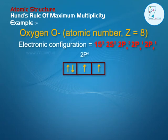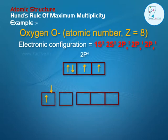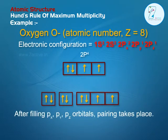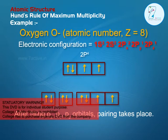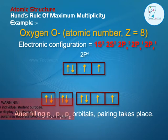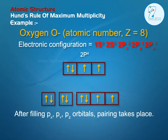Oxygen O, atomic number Z equals 8. Electronic configuration: 1s2, 2s2, 2px2, 2py1, 2pz1. After filling 2px, 2py, and 2pz subshells with one electron, pairing in 2px takes place.